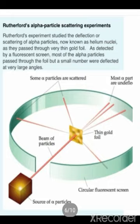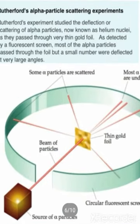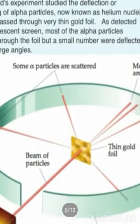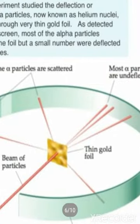So what he did next: he made these alpha particles fall on the gold foil. This is the source of alpha particles — you can see the diagram. Some alpha particles are scattered and deflected from the gold foil, but most of the alpha particles are undeflected.